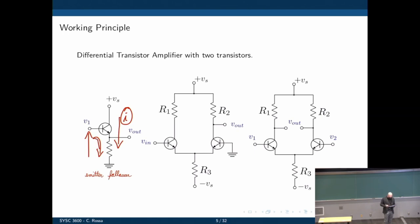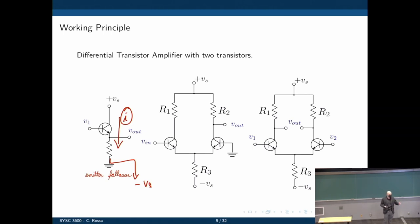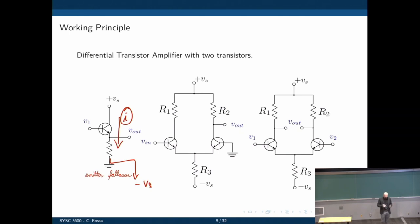Another configuration is to connect the bottom to minus Vs instead. Now we can also have current flowing from V1 to minus Vs, even when V1 is a negative voltage, so long as it's greater in magnitude than Vs. So long as current flows from V1 to the base, there is a current from Vs to the base, and that current is proportional to V1. That's the basic configuration we need to understand how the differential amplifier works.